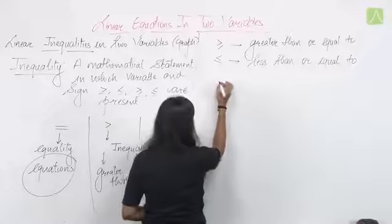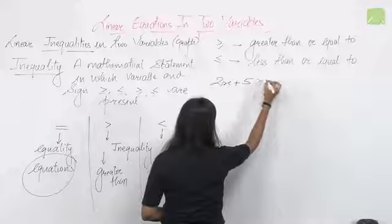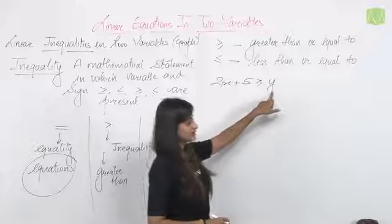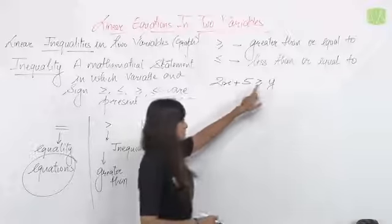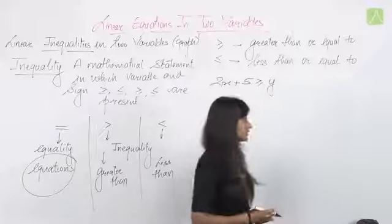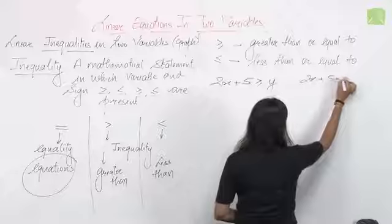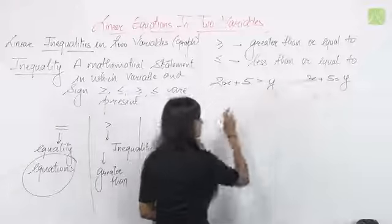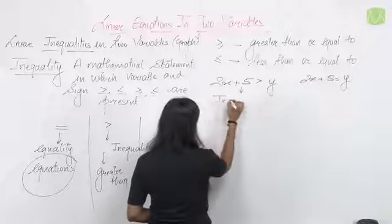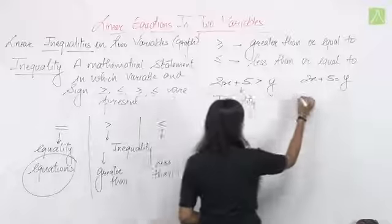Let's take an example: x + 5 ≥ y. Here the power of both variables is one, so it is linear. And since it has a greater-than-or-equal-to sign, it is an inequality. In contrast, if we write 2x + 5 = 0, it has only an equal sign, making it an equation, not an inequality.